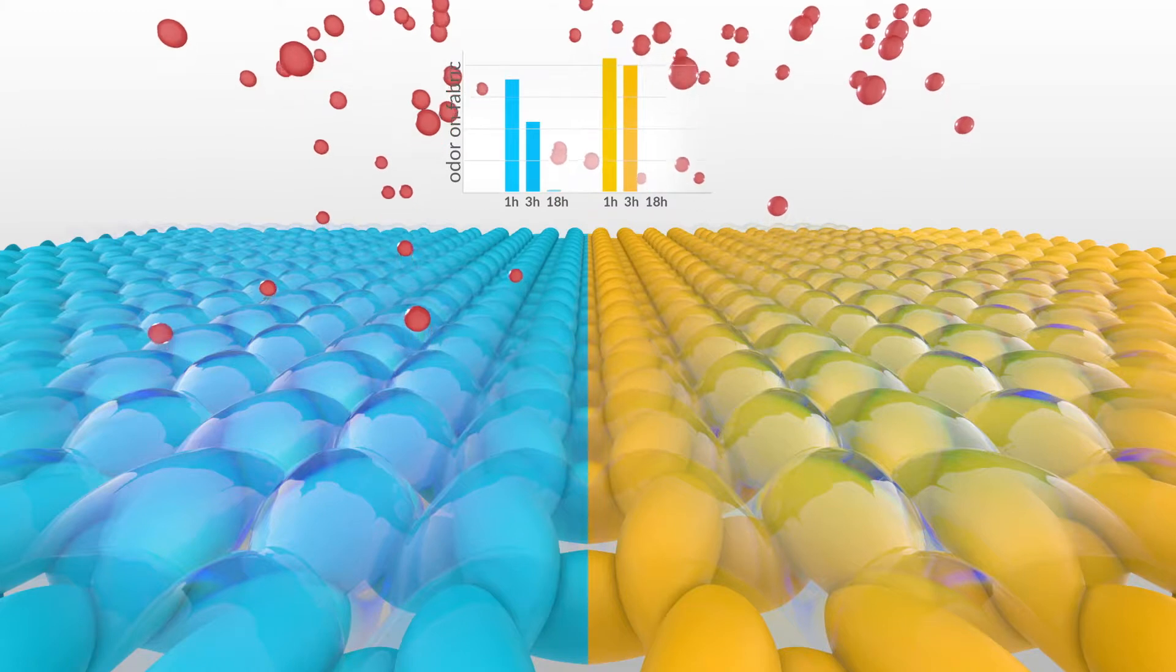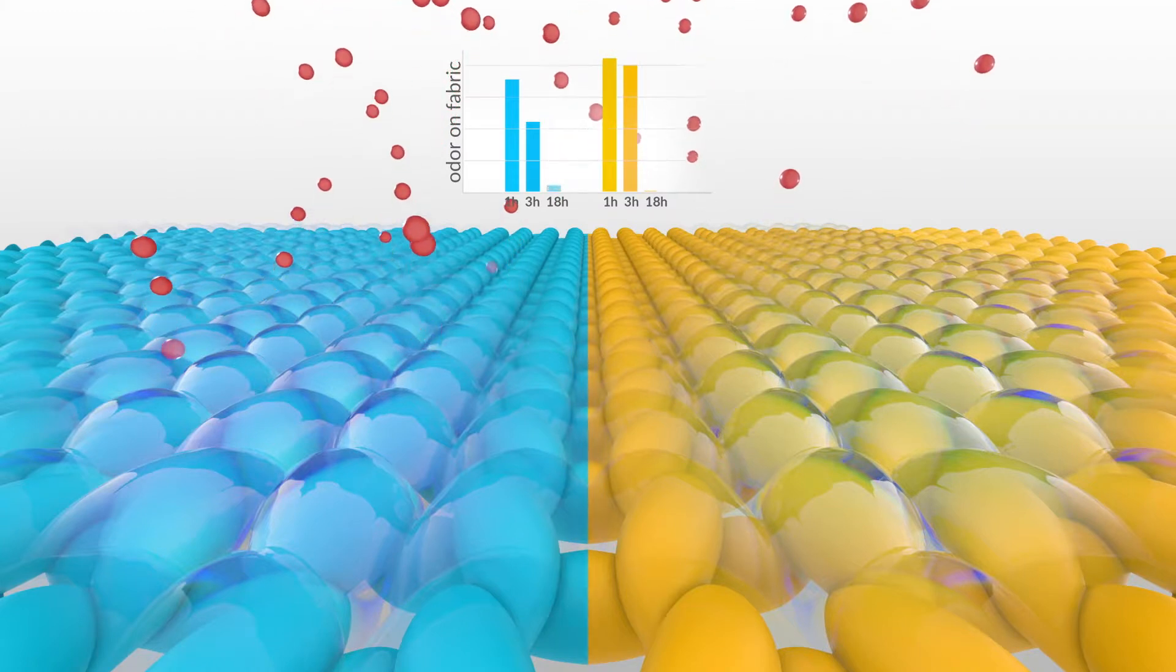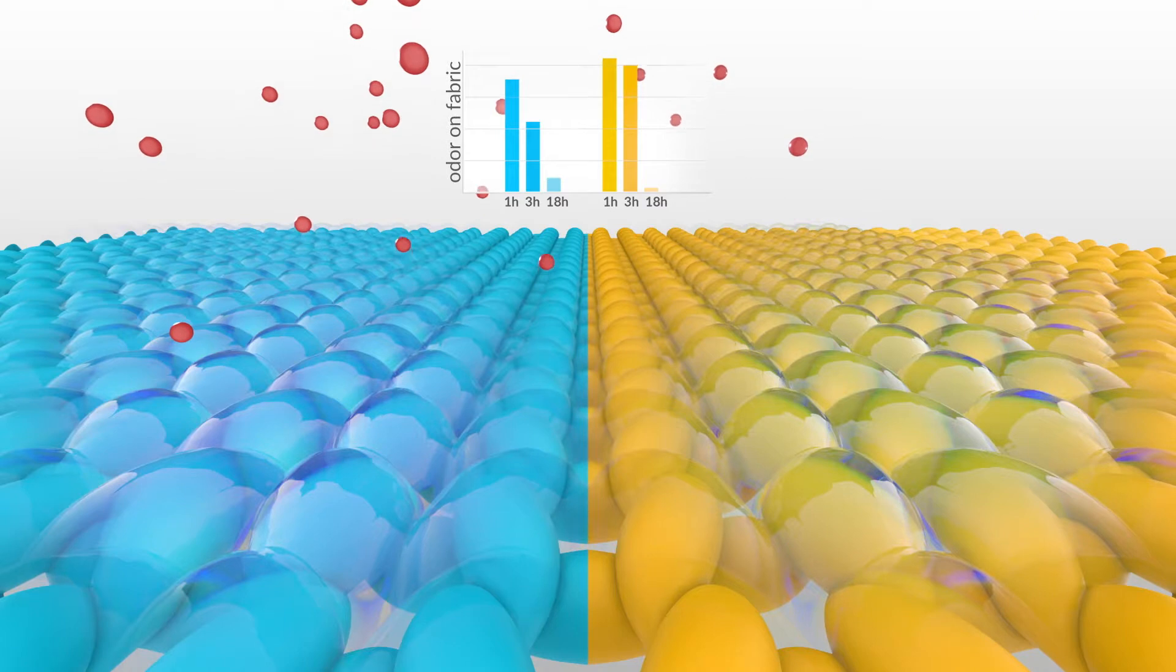Radioactive markers allow an exact quantitative determination of emission throughout the experimental period. The manufacturer, therefore, discovers what percentage of the sweat odor is actually withheld by the textile, and thus, cannot be smelled.